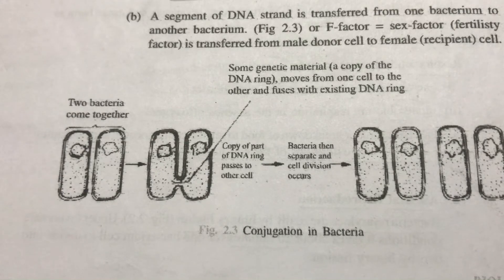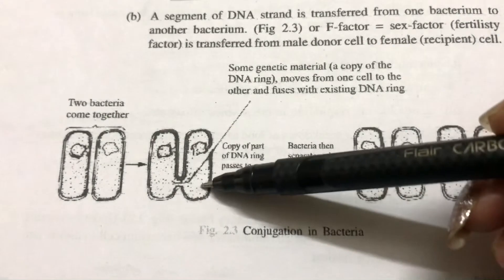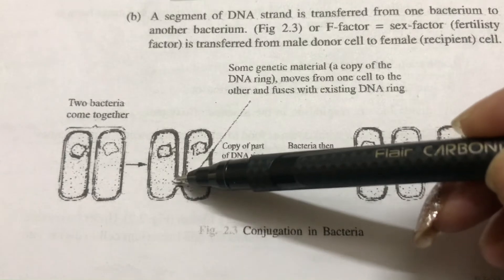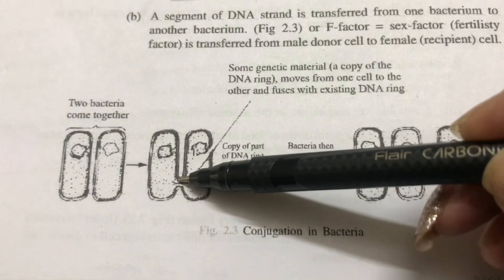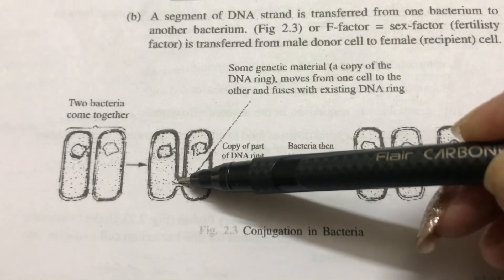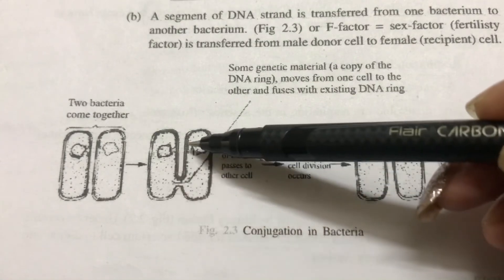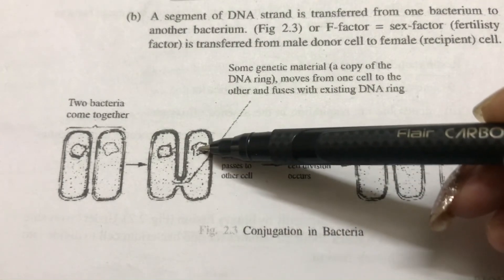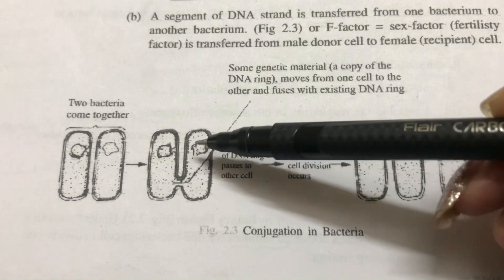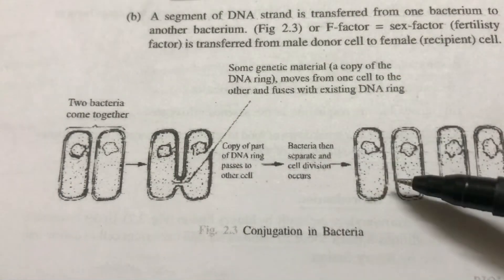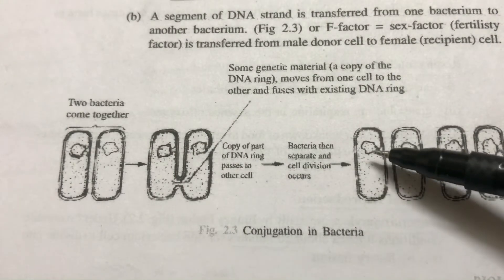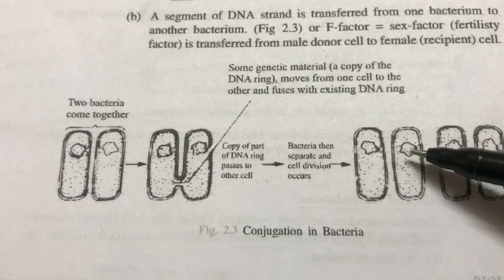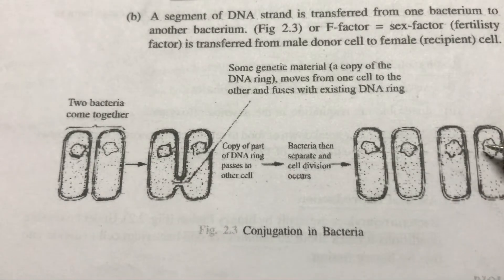Sexual reproduction in bacteria is called conjugation, in which two bacteria come together. A tube-like structure is formed by the combining of pili. Material from one cell moves into the other — the cell from which material moves is the male cell and the other is the female cell. Once the nuclear material has been passed equally into both, they are further propagated or reproduced.